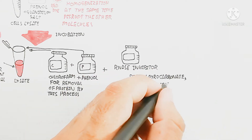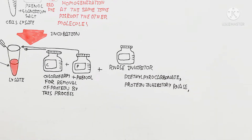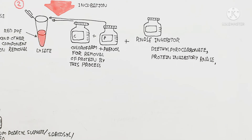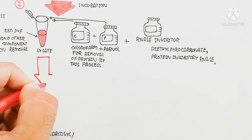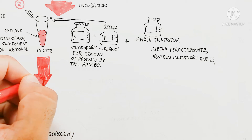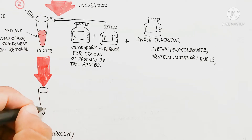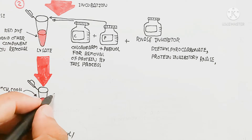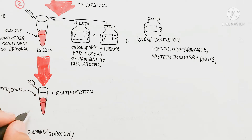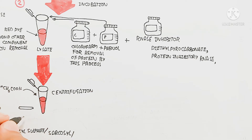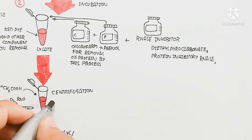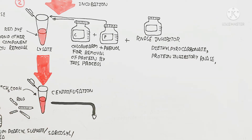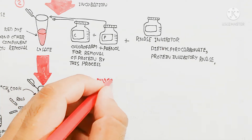Before centrifugation, chloroform and phenol are added for removal of protein. After centrifugation, RNA is separated from protein content and other cellular material. Potassium acetate or acetic acid containing potassium is also added, then the tube is placed in the centrifuge machine to further separate the components.